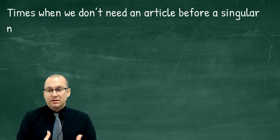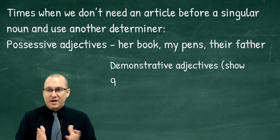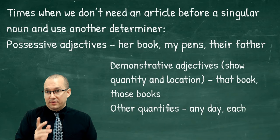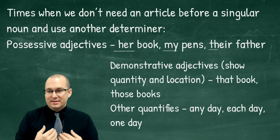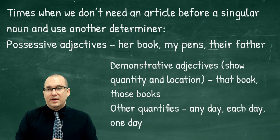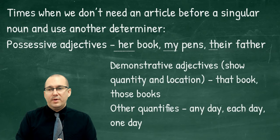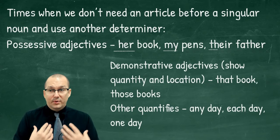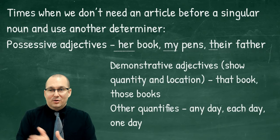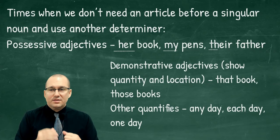There are times when we don't need an article before a singular noun because we use another determiner instead. Possessive adjectives are one example: there's one book, but she is the owner — so we say 'her book,' 'my pens,' 'their father.' When we know who the owner is, we don't use an article. An article is used when nobody owns it — when you don't know who owns it. So if there's a book on the floor, you say 'there's a book on the floor,' but if someone says 'that's my book,' then it becomes 'my book' or 'his book' or 'her book.' 'A' is used when we don't know who possesses or owns the thing.